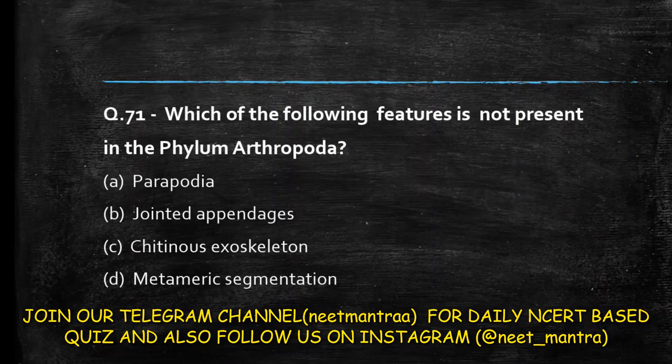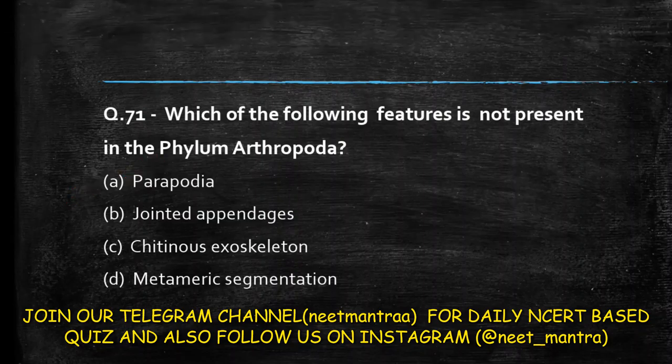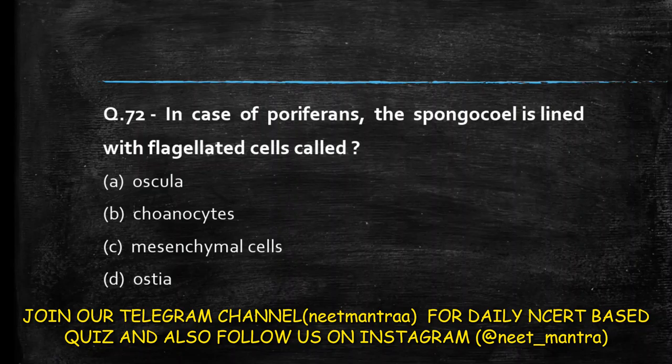Next question: which of the following features is not present in phylum Arthropoda? Options are parapodia, jointed appendages, chitinous exoskeleton, metameric segmentation. Options B, C, and D are all found in Arthropoda. Parapodia is a character of Annelida. So the answer is option A: parapodia.